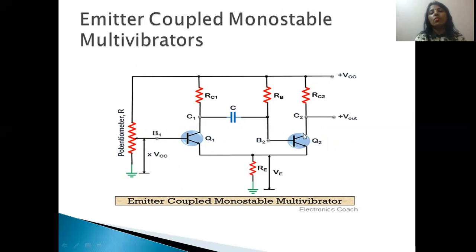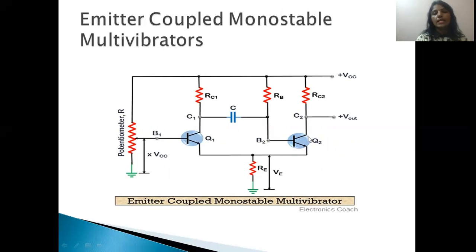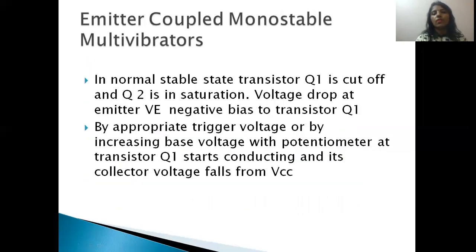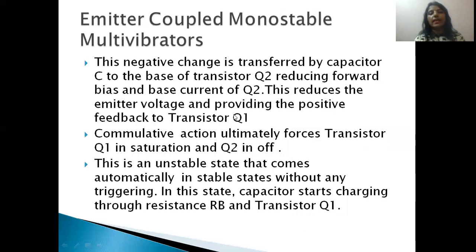The voltage value is reduced, the collector current is reduced, and the emitter current is reduced. For the base voltage, it increases for Q1 while Q2's base voltage is reduced, and the collector voltage is also reduced. In this way, a cumulative process drives Q1 into saturation and Q2 into cut-off. This process is shown point-wise in these two slides — cumulative actions ultimately result in Q1 saturation and Q2 cut-off.